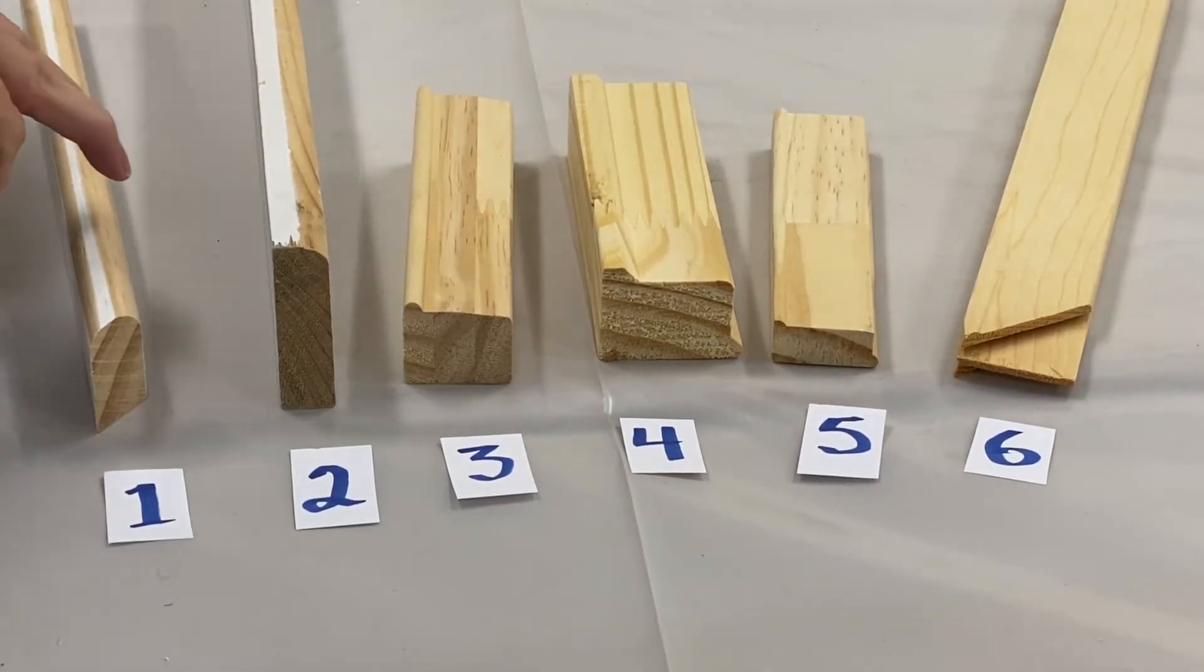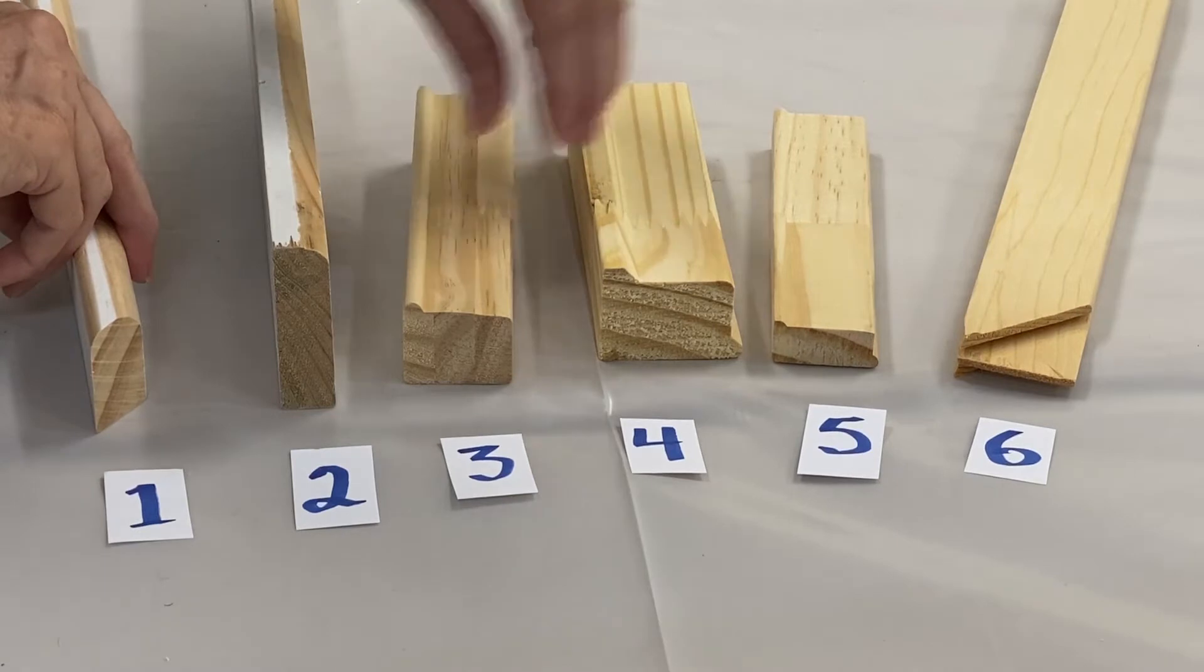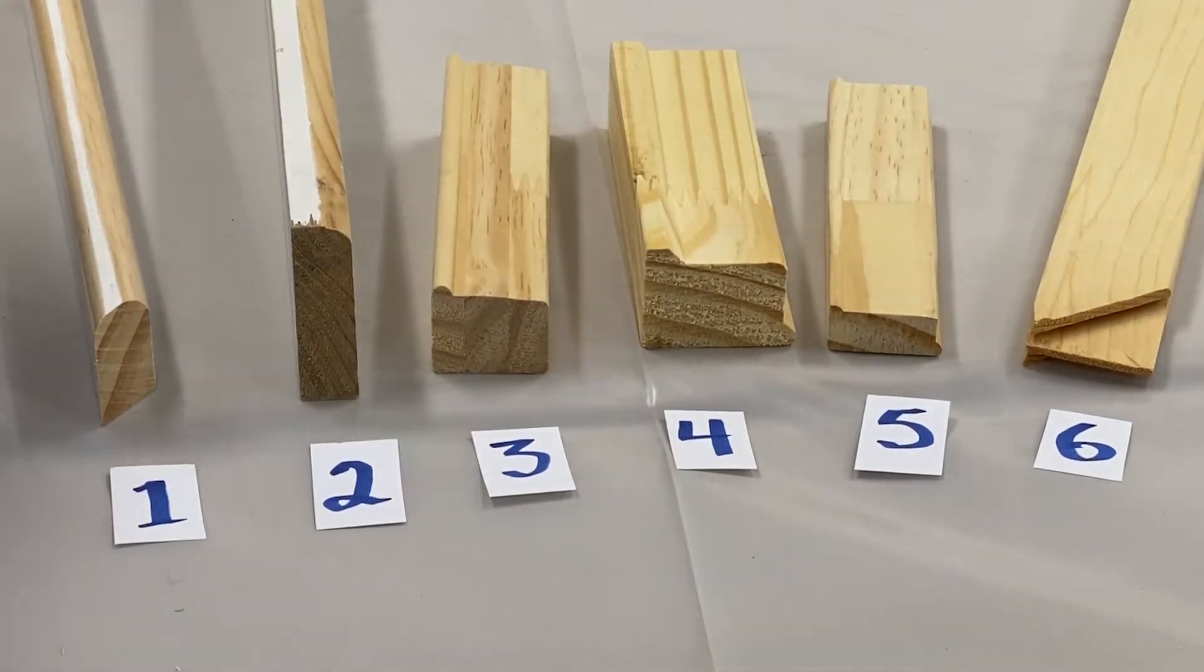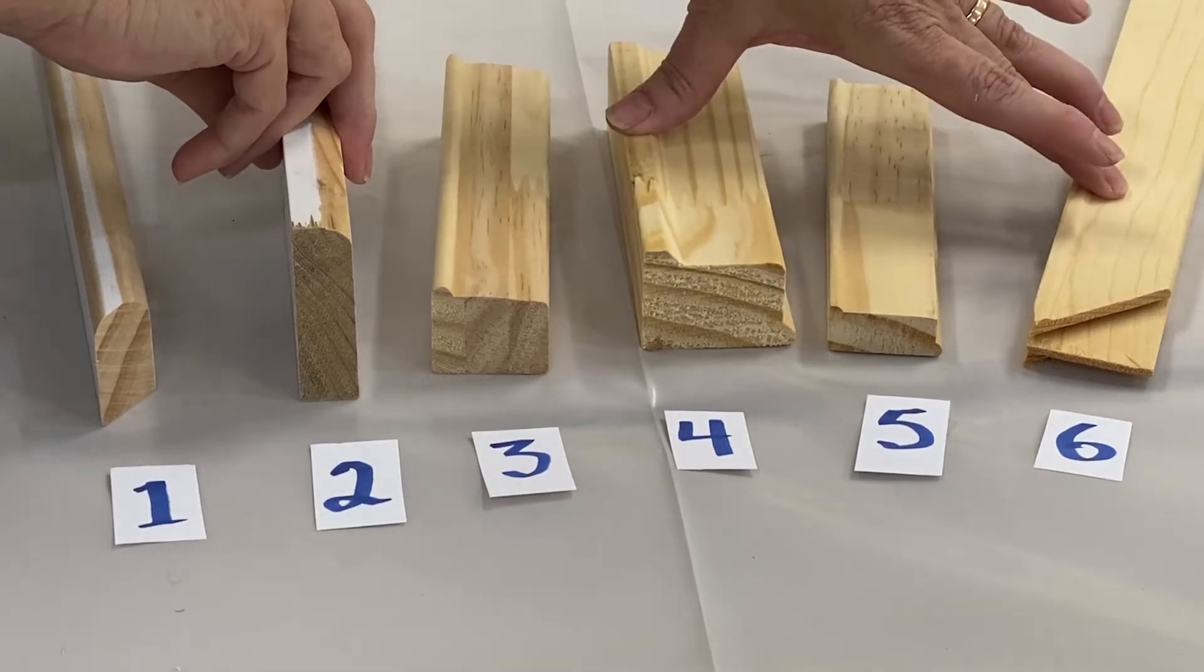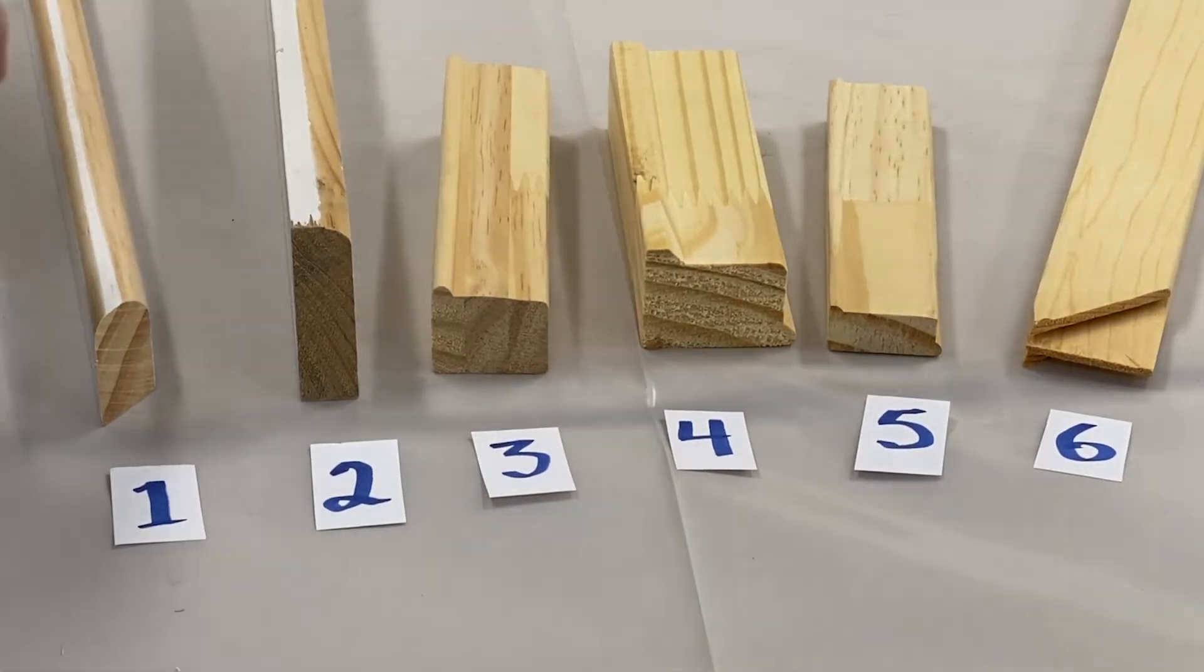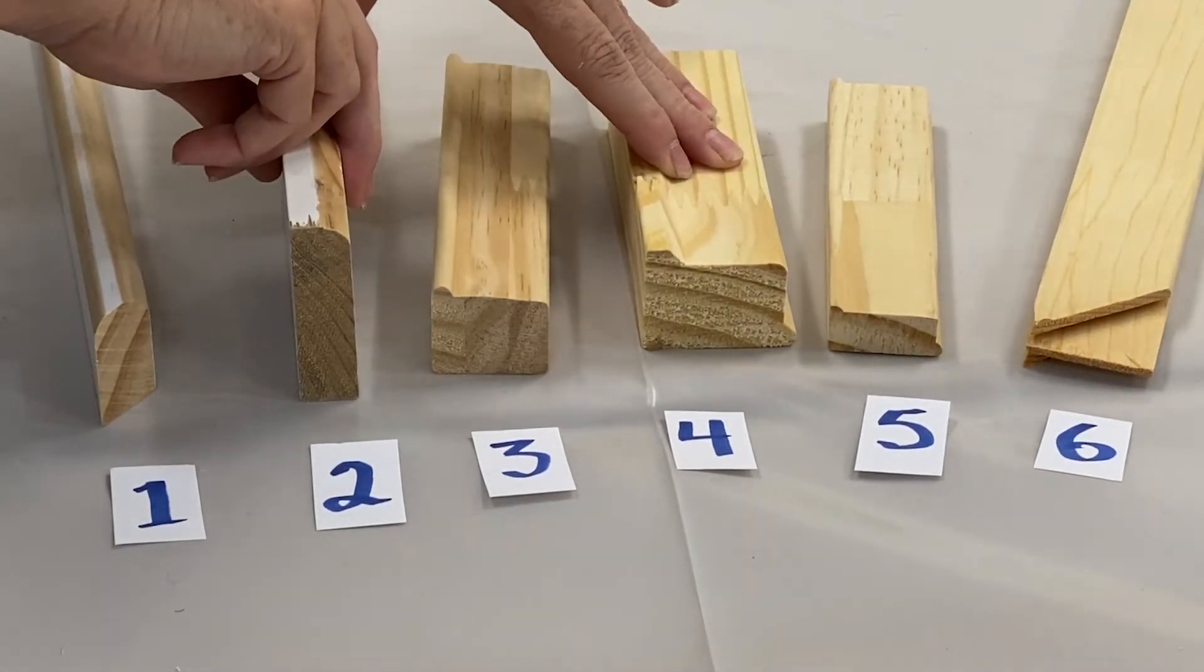For geclay stretching, we generally use number one, number three, or number five. And for stretching canvases that will be painted on, we generally use number two, number four, or number six, with the heavier duty bars being used for bigger and heavier projects.